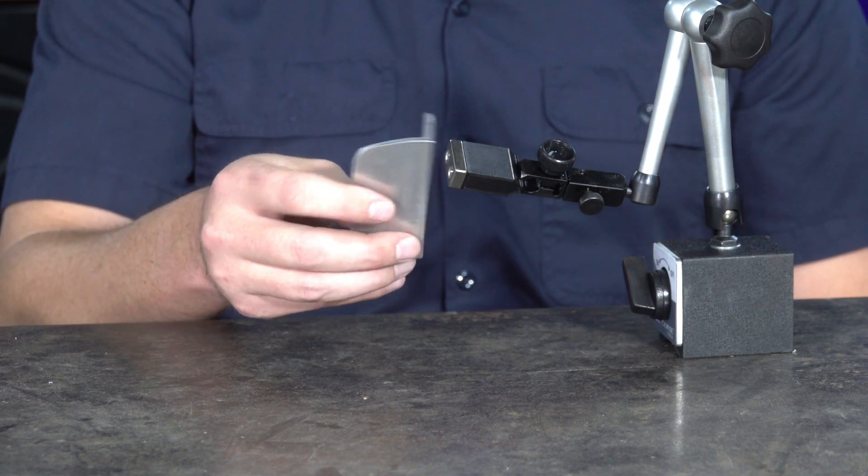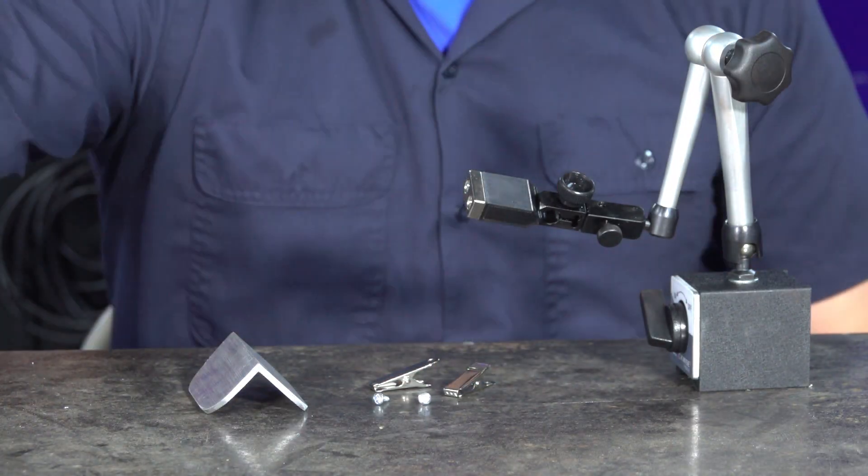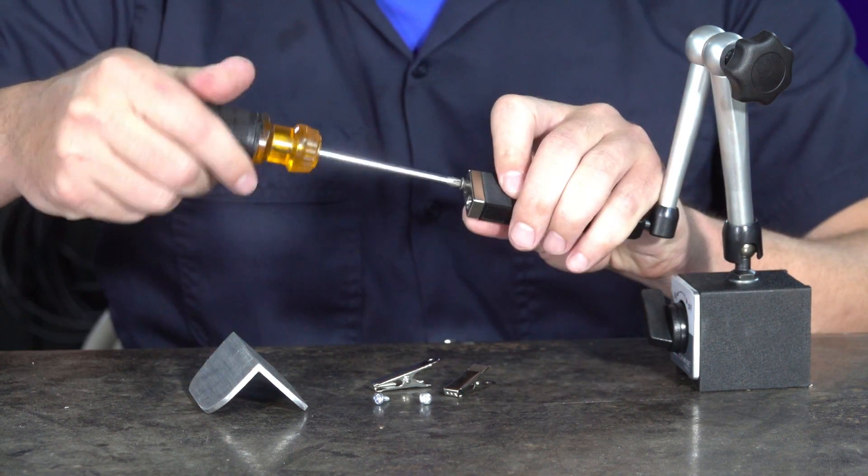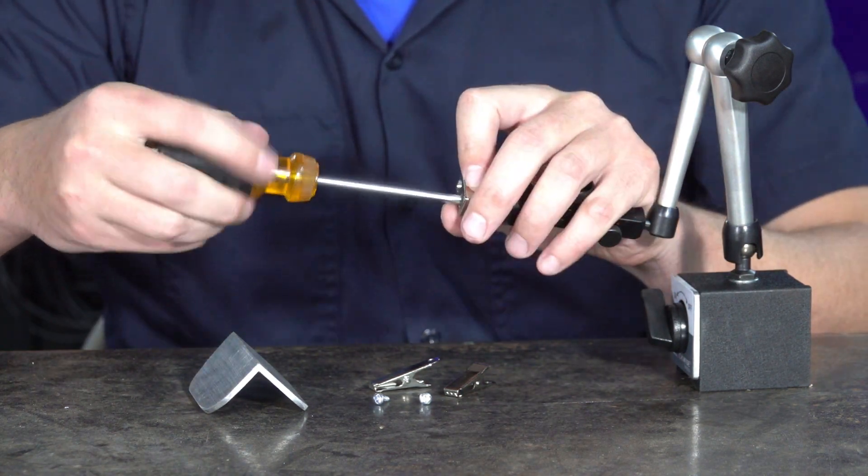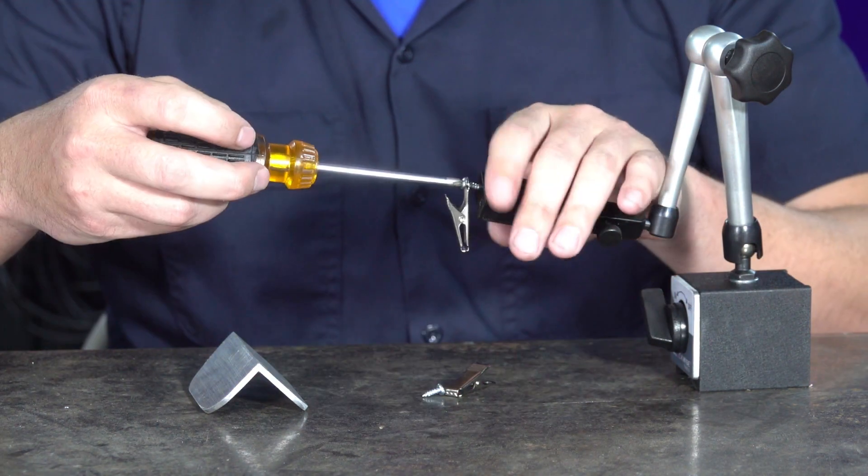But if you don't want to hold on to steel and instead you want to hold on to some pieces of aluminum, you need to switch over to these gator clips, which is easy enough. You simply remove the magnet and then screw in the gator clips one at a time.